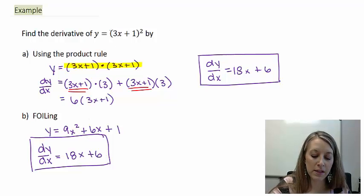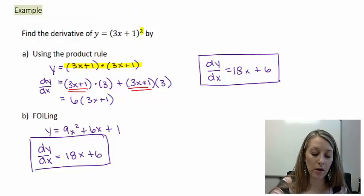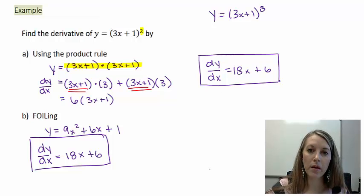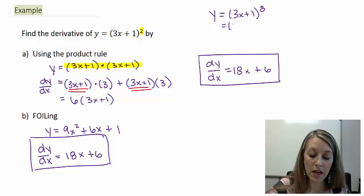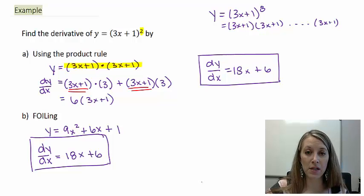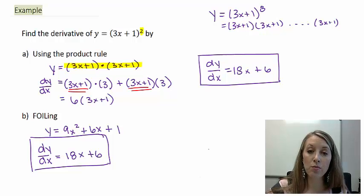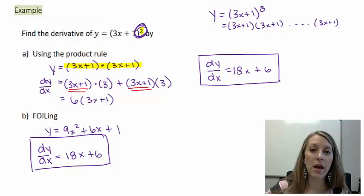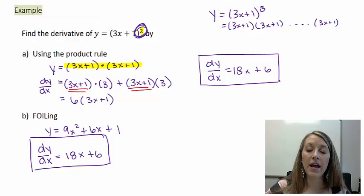It was fine to take the derivative of this example using one of those two methods. But what if the example was beyond squared — what if we have y equals (3x + 1) to the 8th? We would have to multiply (3x + 1) out 8 different times, or use the product rule 8 different times — neither of which we want to do. So what happens when we have a higher exponent? This is why we need this last differentiation rule, called the chain rule.